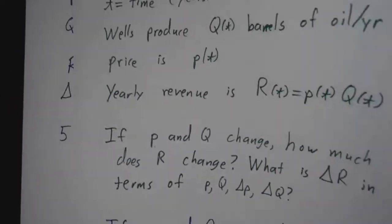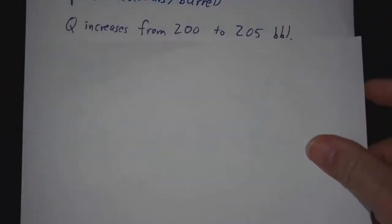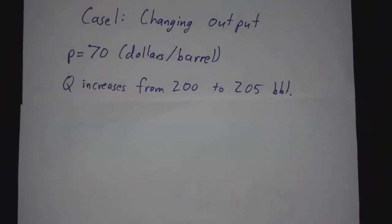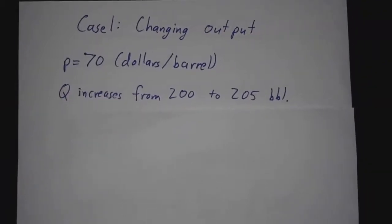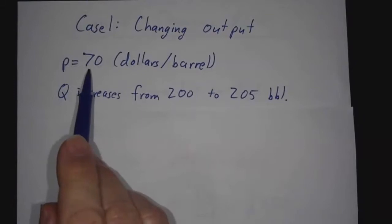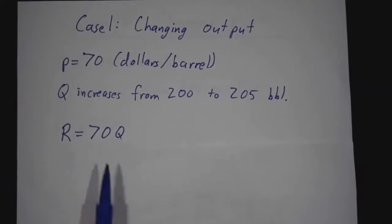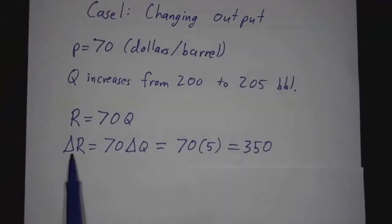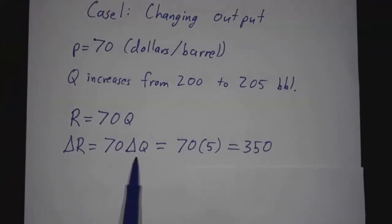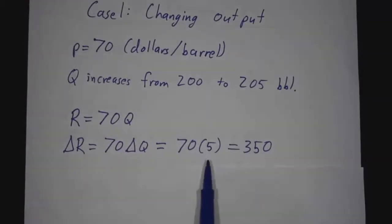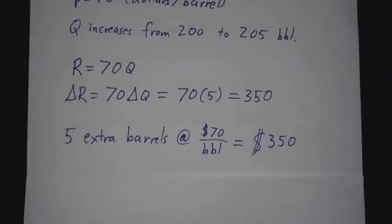We'll do this one case at a time. The simplest case is where the price is constant. If the price is $70 a barrel and the output increases from 200 to 205 barrels, then the revenue is $70 times however many barrels you produce. The change in revenue is $70 times the number of extra barrels. We went from 200 to 205, so the change in q is 5, giving us $350 extra — five extra barrels at $70 a barrel.